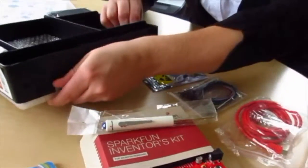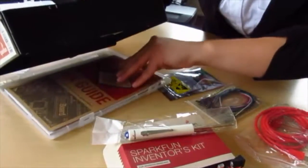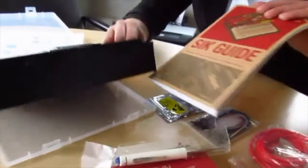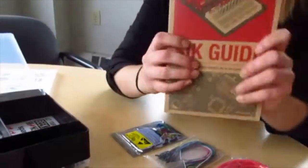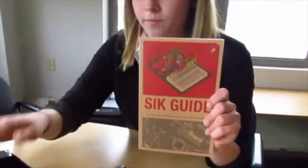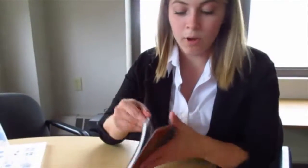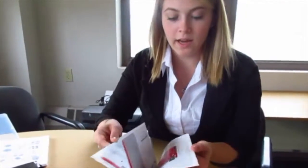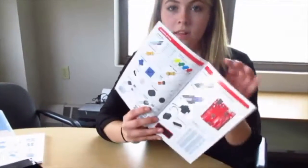Underneath your SparkFun Inventors Kit is a small compartment that has the SparkFun Inventors Kit guide. For more detailed information on the different parts, go to page 12 and 13 of your inventor's guide for a list.